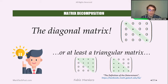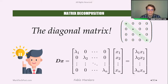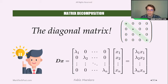If we cannot use a diagonal matrix, we can refer at least to triangular matrices — the upper triangular or the lower triangular. For example, the diagonal matrix is very simple to multiply with a vector. In fact, the multiplication between a diagonal matrix and a vector is simply the scaling of the vector itself.